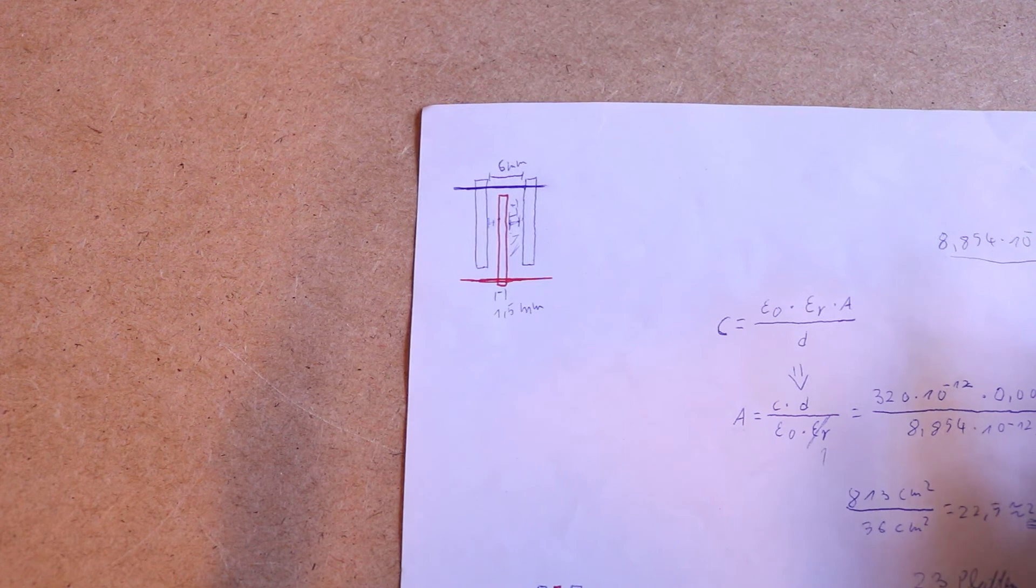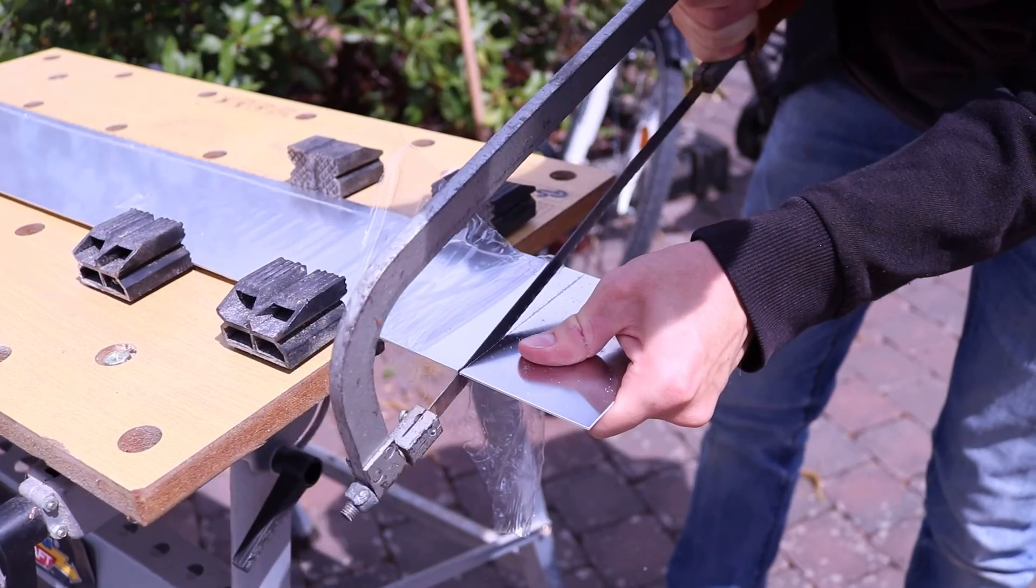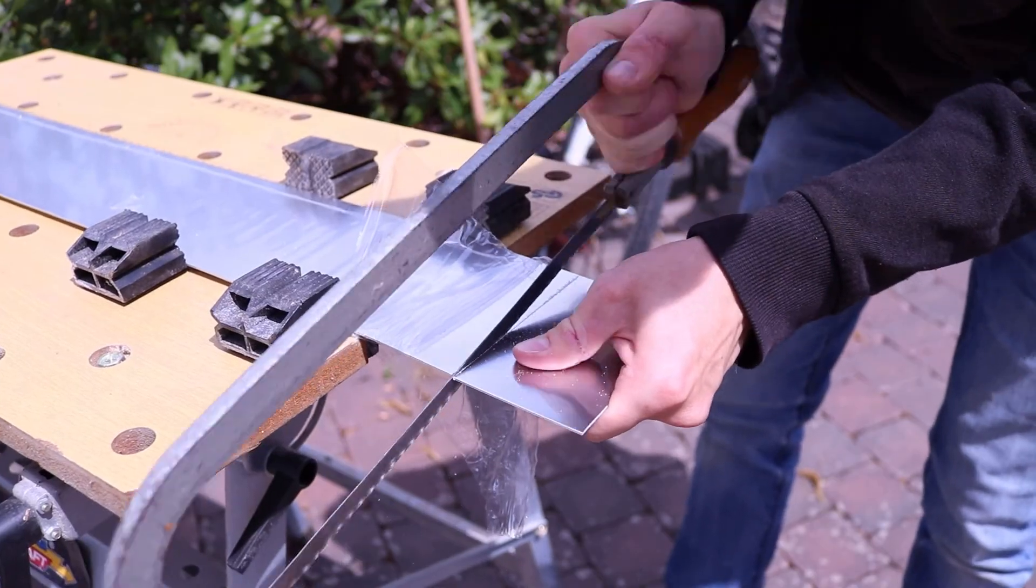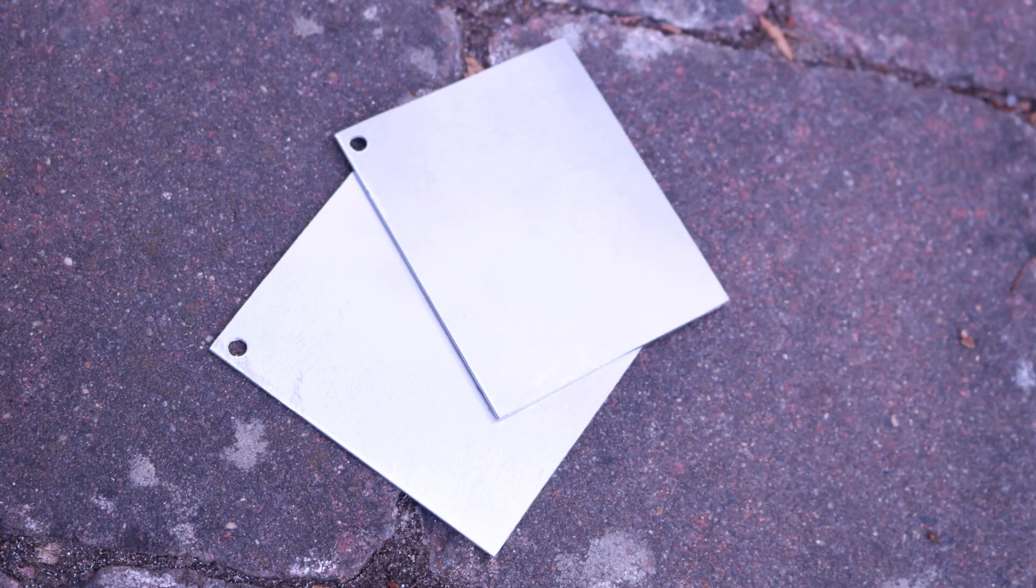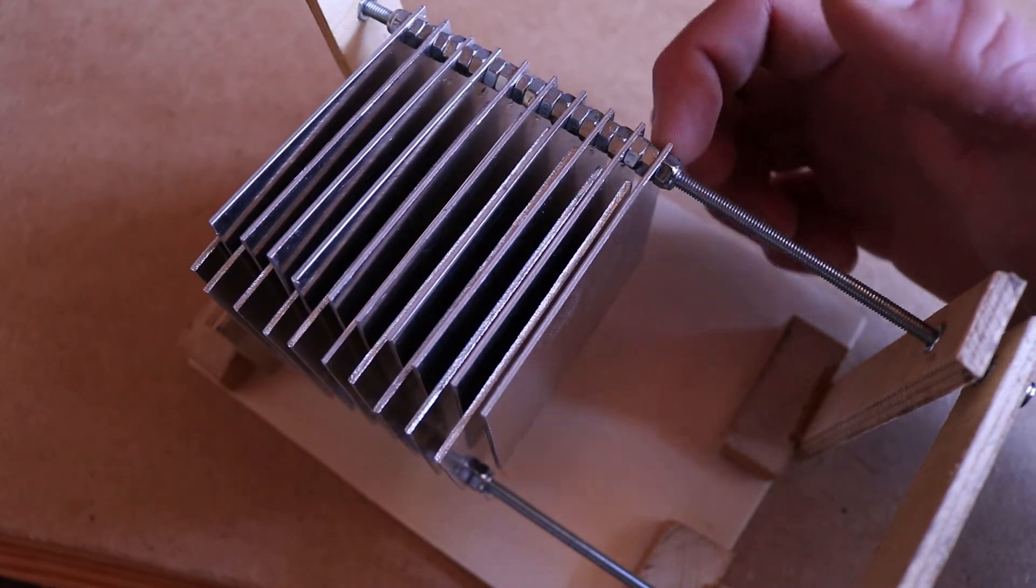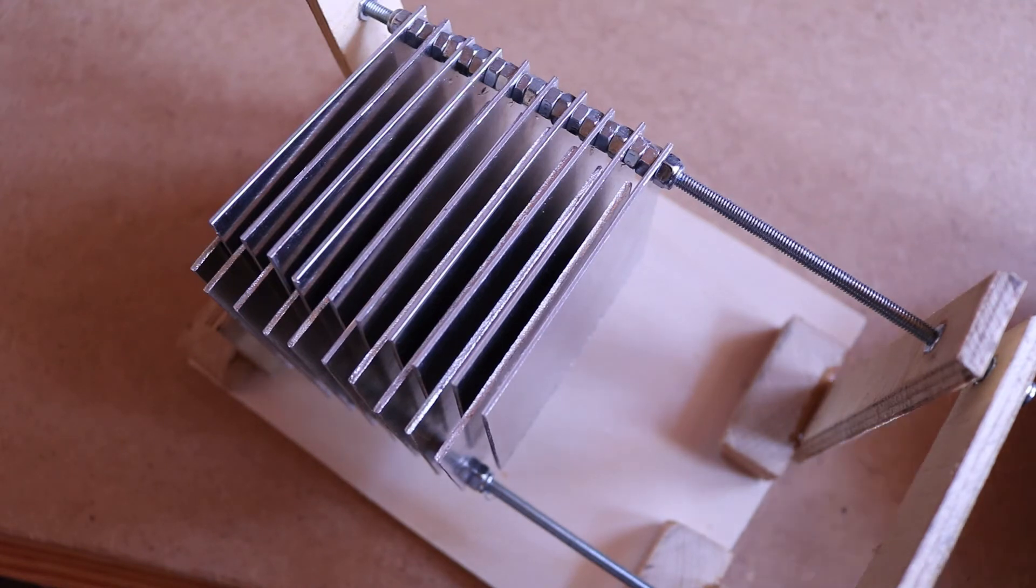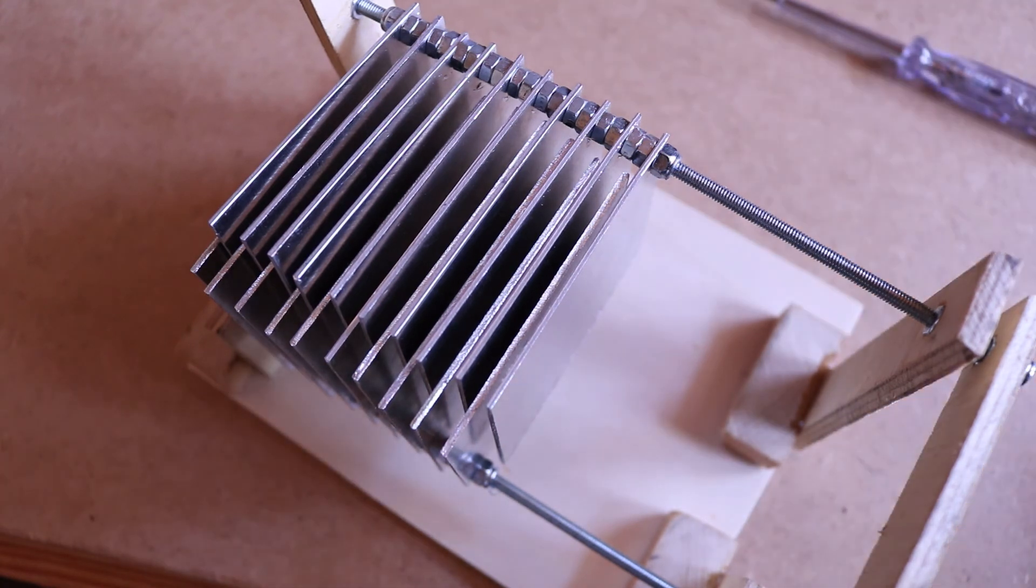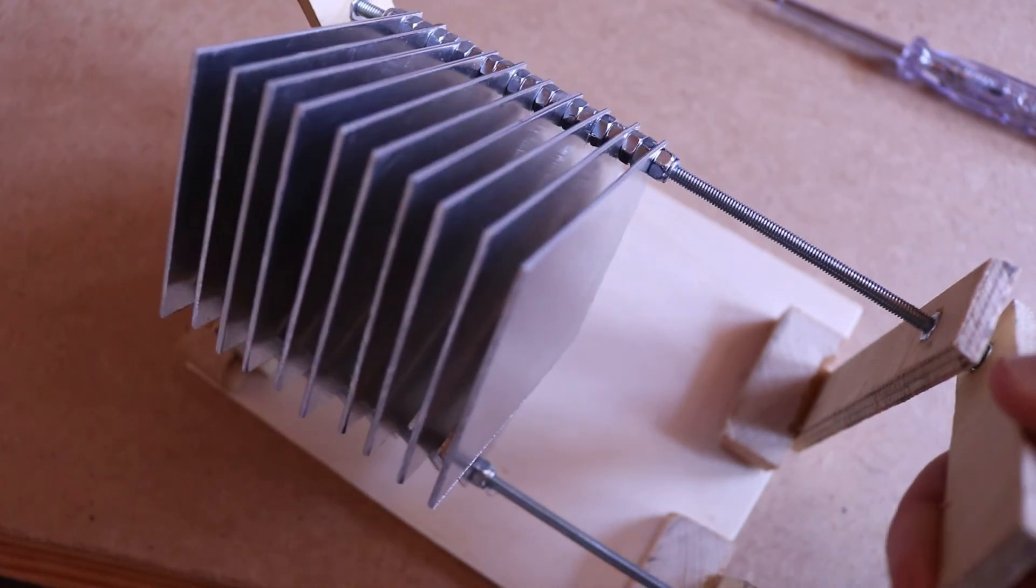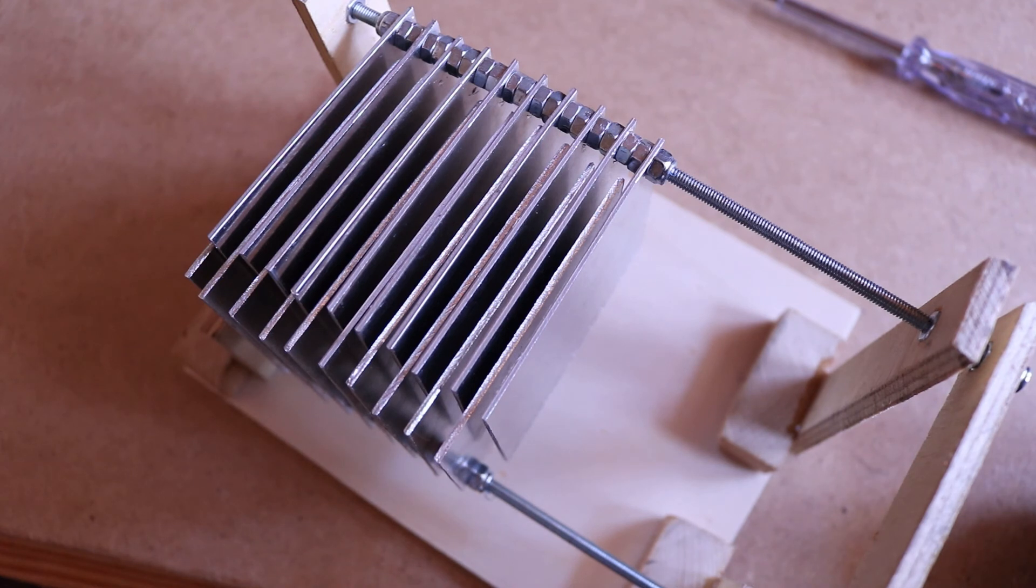So I started by cutting an aluminum sheet into small plates, then I drilled holes to them, each on one side. After that, I mounted them on a threaded rod, separated the plates by nuts—two M4 nuts—and mounted this on this wooden stand so I can move this. That's my variable capacitor. I will probably add some plates in the future because the capacitance is still a bit low.